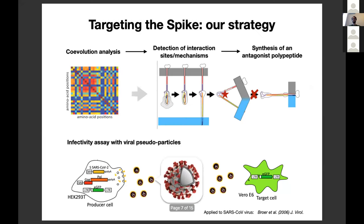Our strategy in short works like this: we first perform a coevolution analysis on the whole structure of the S protein to detect the interaction sites and mechanisms involved in the fusion of the two membranes. Then we try to synthesize an antagonist polypeptide to block exactly that stage. We also have to test with an infectivity assay, and this is where the CIRI comes into play. They have a fantastic assay that they applied many times before this project, which they do by producing viral pseudoparticles.